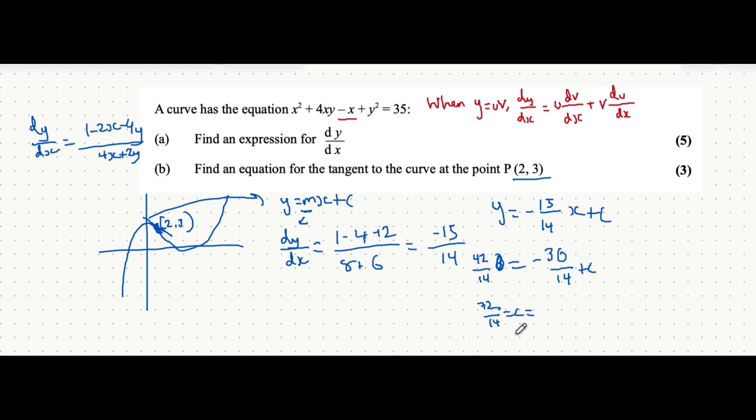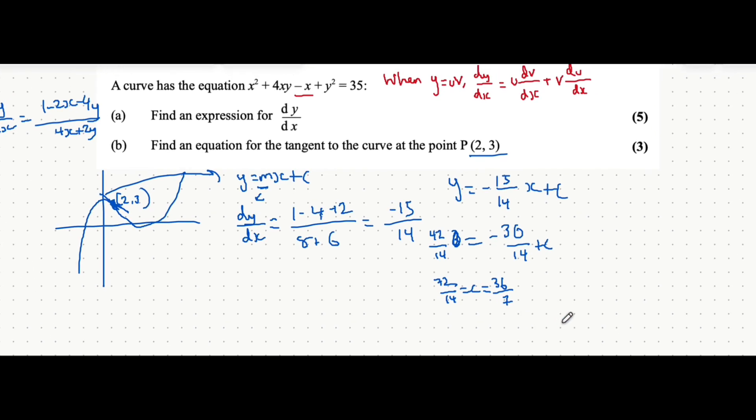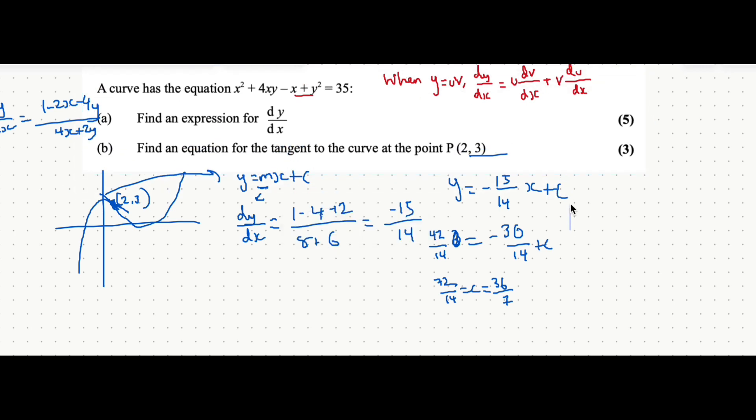Which I'm sure you can factorize down because they're both even. So you can divide both top and bottom by 2 to get 36 over 7. And you can't really factorize that further. And so your final equation of the tangent is y equals minus 15 over 14x. Let's cancel the c out and write plus 36 over 7. That's your final answer here.